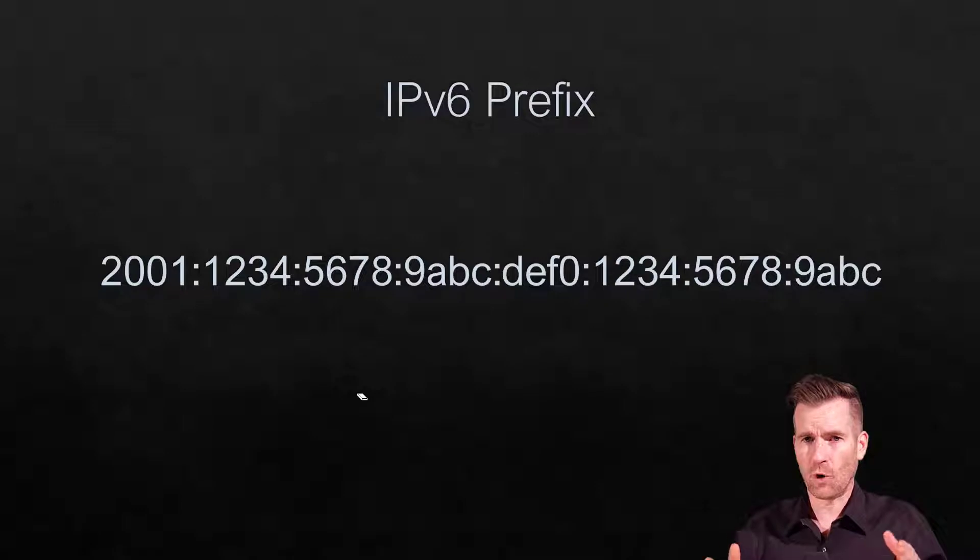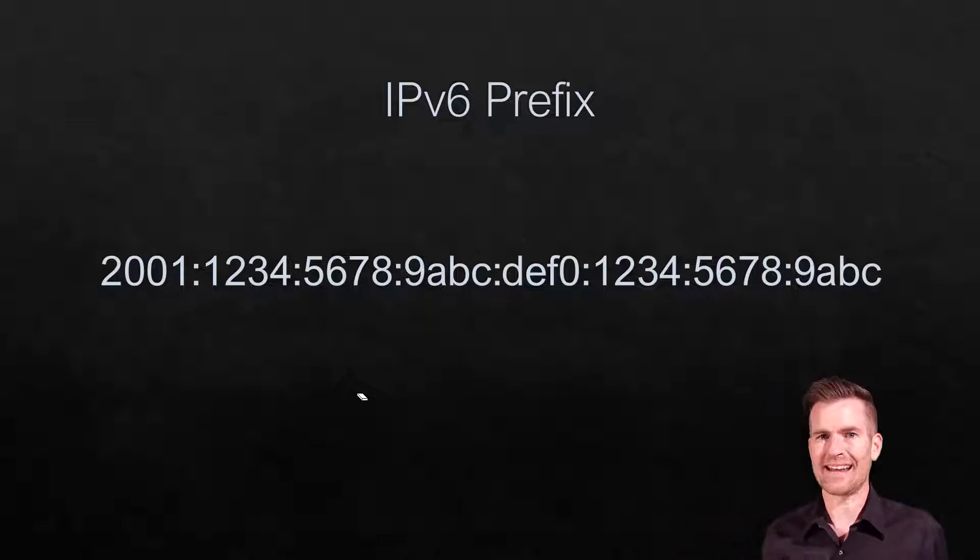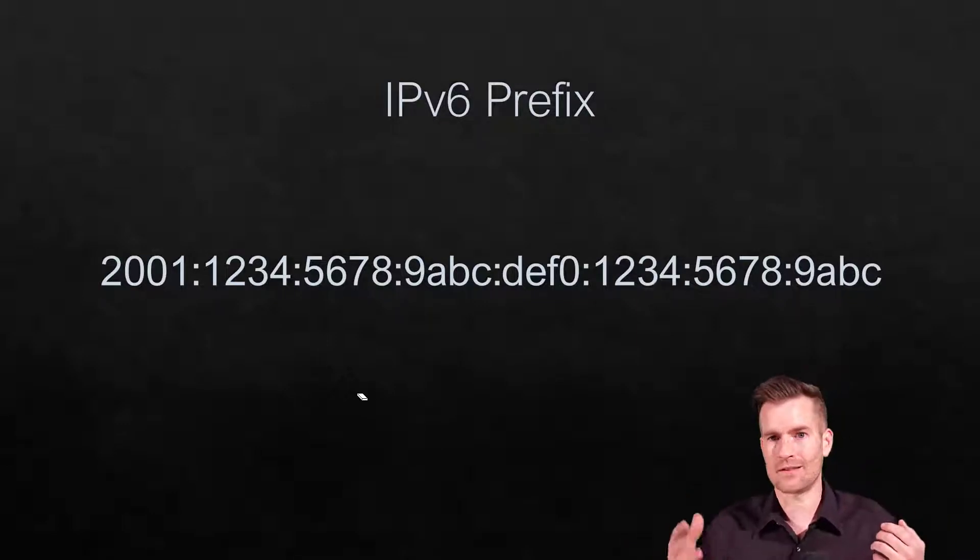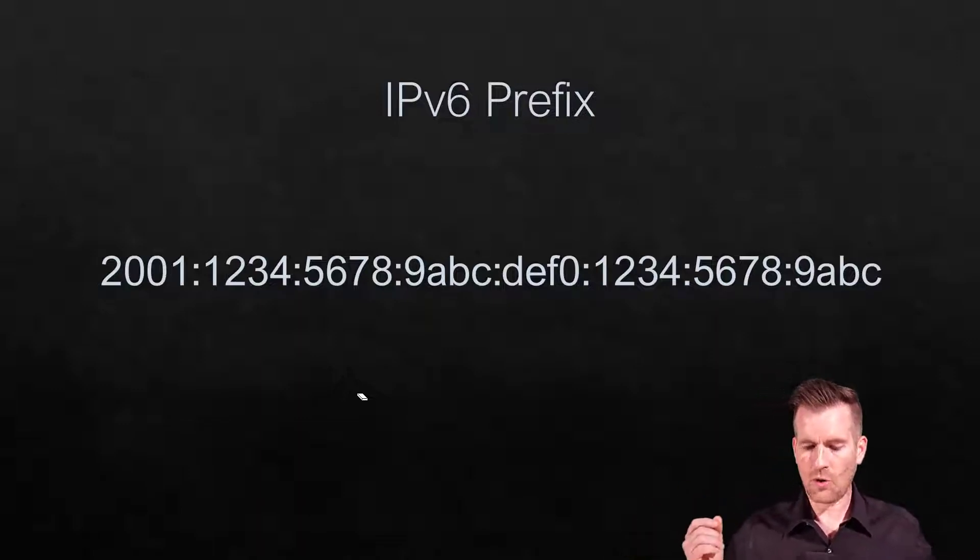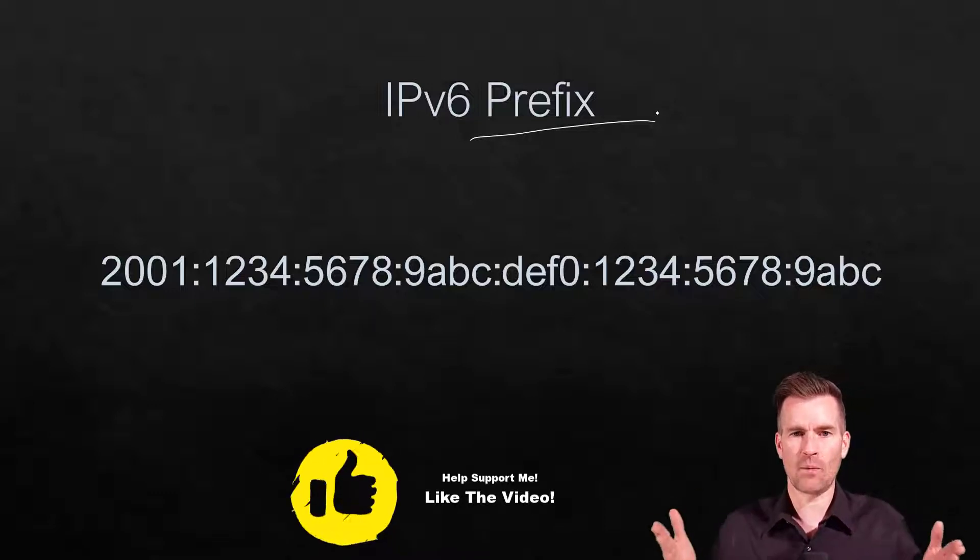With IPv4, we had a subnet mask to identify how many bits were for the network versus the host. IPv6 has something similar. In IPv4, we started using CIDR notation to identify the bit count rather than the full subnet mask. IPv6 uses prefix length to identify the network portion and the interface portion of the address.